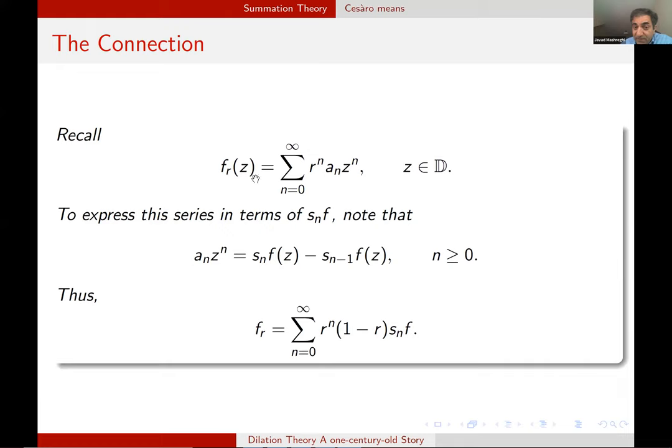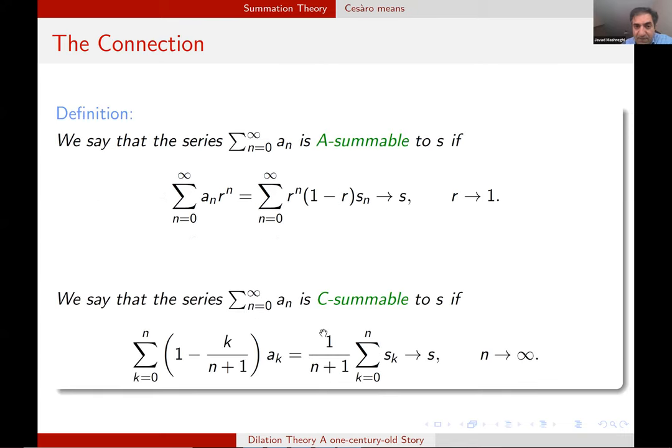The connection, we already saw F_R. I can write it here. There is R to the n times our a_n z^n. And to write this in terms of S_n, note that a_n z^n can be written as S_n of F minus the previous one. And if I plug this identity to this and simplify, I obtain this representation of F_R in terms of S_n of F. And here are my coefficients. So I obtain a summation as in the case. The only difference is that it's not discrete. Our parameter is R, but this really doesn't matter. And we can say, I mean, knowing this, a series is Abel-summable if this quantity, write it in terms of the coefficient or write it in terms of the partial sums, converges to s as R goes to one. And for the Cesàro summation, we saw it before. I mean, these two are two famous methods of summation.